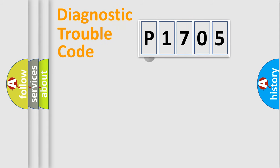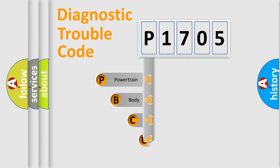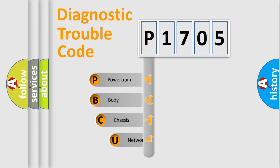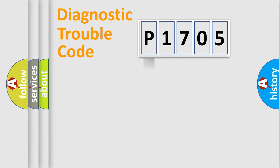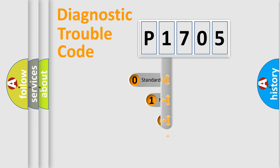Let's look at the history of diagnostic fault code composition according to the OBD2 protocol, which is unified for all automakers since 2000. We divide the electric system of an automobile into four basic units: Powertrain, Body, Chassis, and Network. This distribution is defined in the first character of the code.